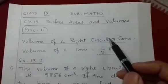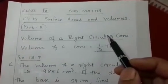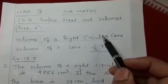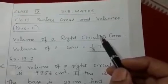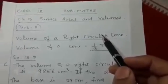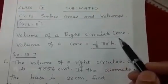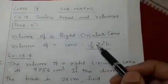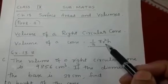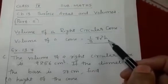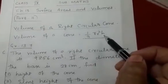Hello students, let's continue with the chapter surface areas and volumes. In the previous video, we were discussing about the volume of a right circular cone, that is volume of the cone is equal to 1/3 π r² h. Let's continue with that.